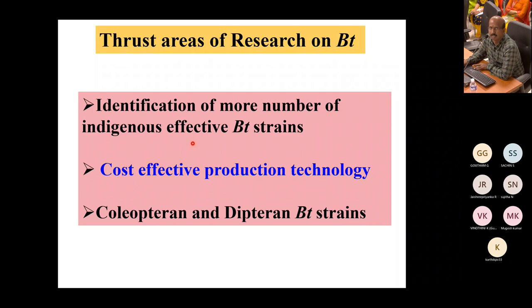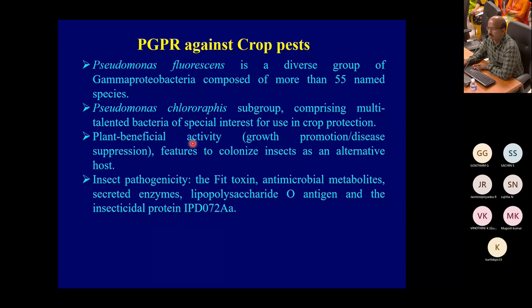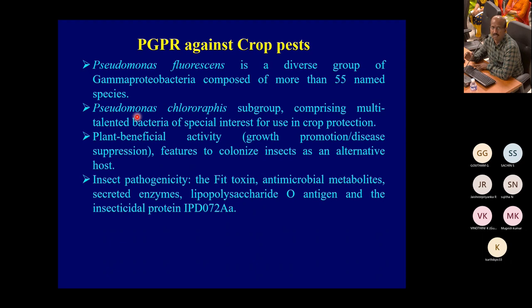Coming to the third part — PGPR against crops. This is well-known work at TNAU, and our department has published several papers on it. I want to add some points. Pseudomonas fluorescens is a diverse group of bacteria, and we have several species. When we started working on fluorescent Pseudomonas for management of Nephrocelis medinalis and Rhizoctonia solani in rice, we used it for disease management.